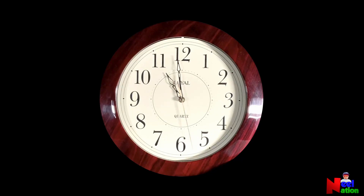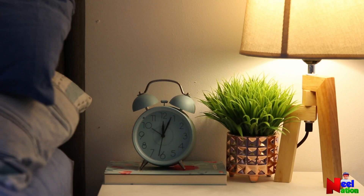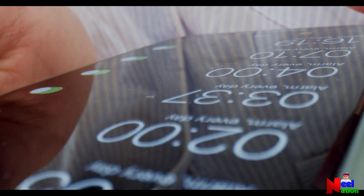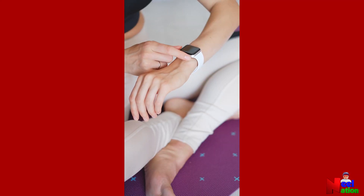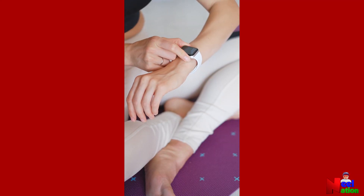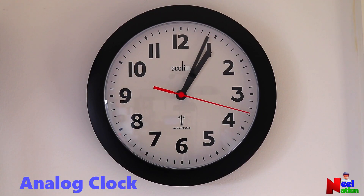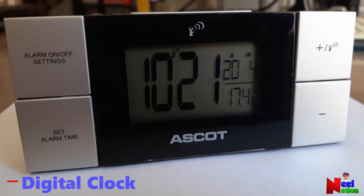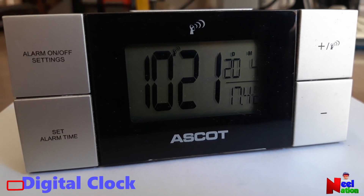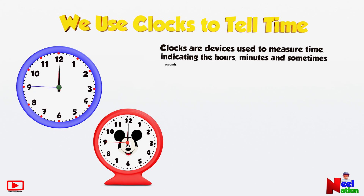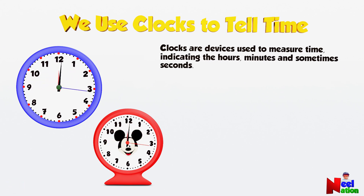Clocks are everywhere — in your house, in the buildings, and in your phone. Do you know that your watch is also a clock? There are two types of clocks: analog clocks and digital clocks. Clocks are devices used to measure time, indicating hours, minutes, and seconds.